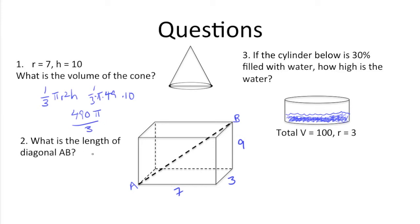Number two, what is the length of diagonal AB? This is kind of a tricky question. We have a diagonal not just going through one side, but the inside of the solid, going from the near side A to the far side B.